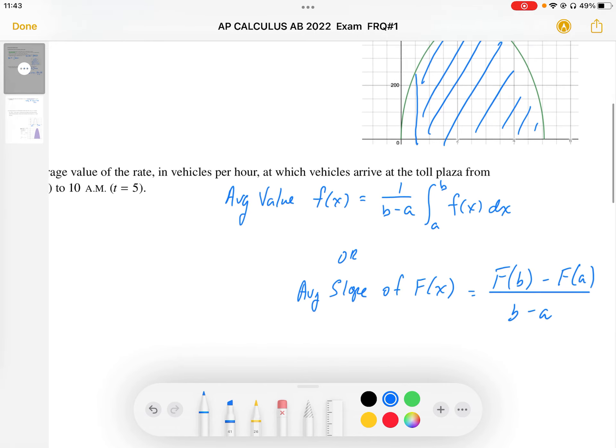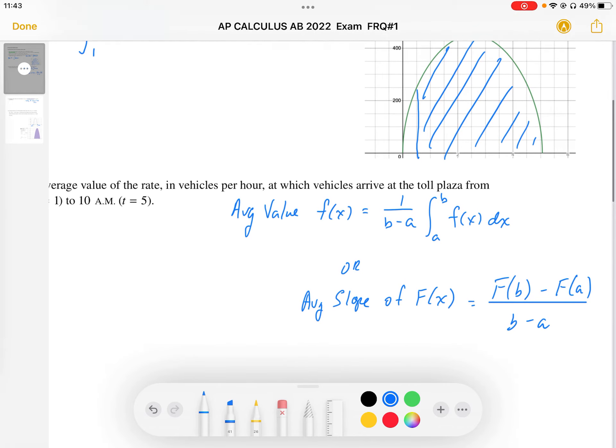The other way we can do this is to think of this as the average slope of the accumulation. The total number of cars would be the area under the curve or the displacement F(b) minus F(a), divided by b minus a, which represents the difference in time. That will give us the average rate of change of the accumulation function.